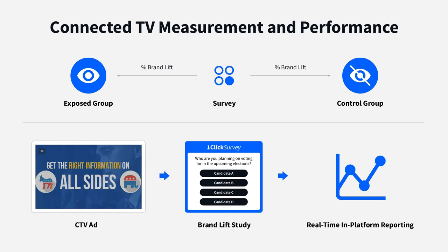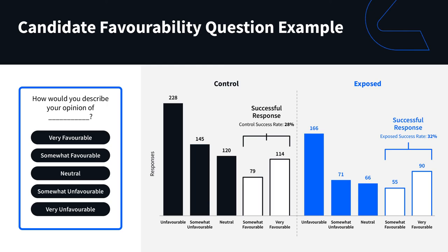We also have a white-labeled candidate lift survey we did for a political campaign. The question asked to audiences was 'how would you describe your opinion of [the candidate's name]?' For audiences who were exposed to the ads, we saw a 4.23% lift in the exposed group. This data is extremely valuable because it provides validation that the strategies, tactics, and creative we're leveraging are effective in providing lift for your candidate. We're able to further break this out by geo, creative type, channel, and more. Overall, this is one of the strongest tools that political advertisers can take advantage of.